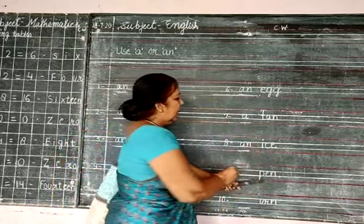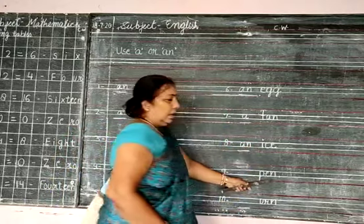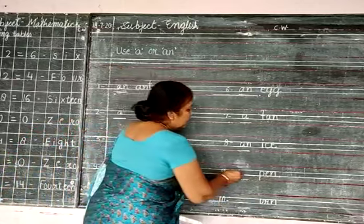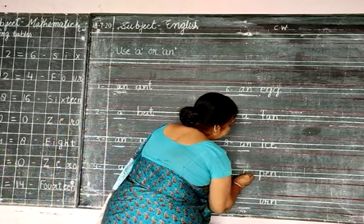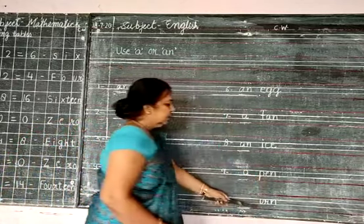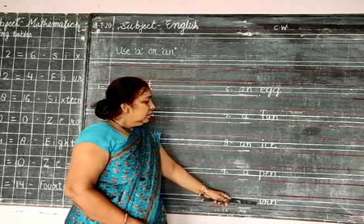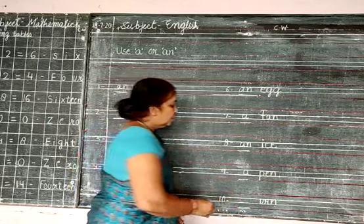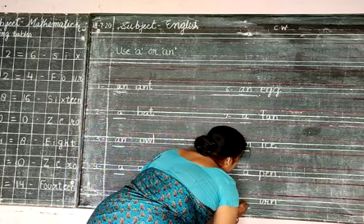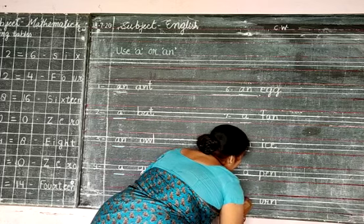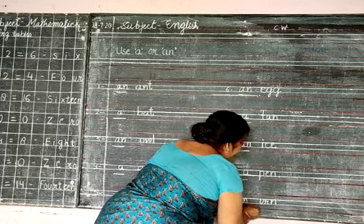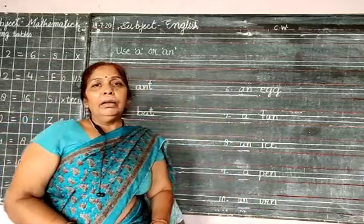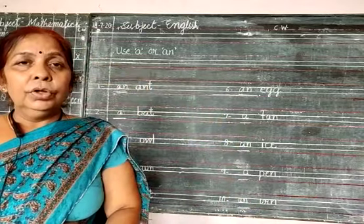Next, P-E-N. This word starts with a consonant, so you write A. Next, U-R-N — this word starts with vowel U, so you write AN. You write neatly and practice again and again so you can learn and write. Thank you.